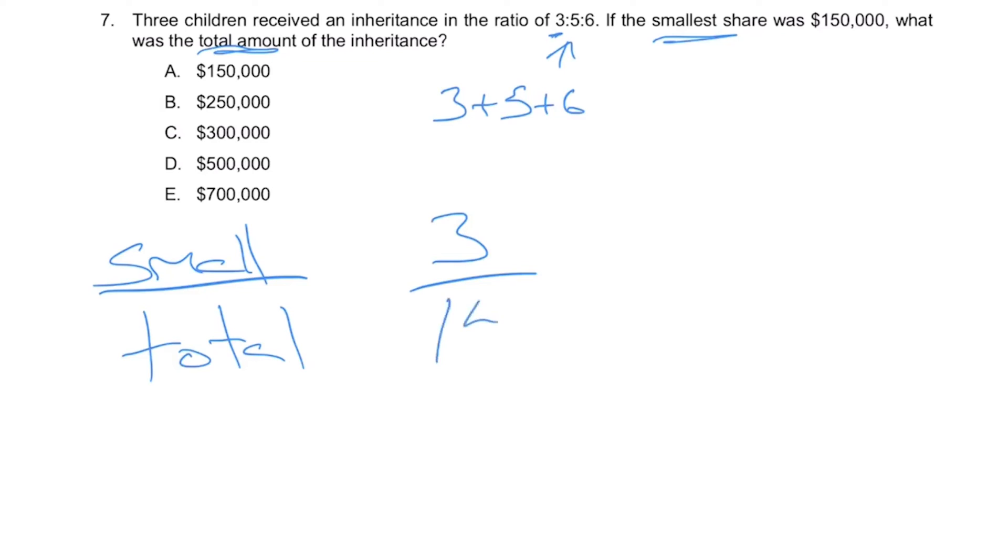The small over the total inheritance is going to equal—so now we deal with the money. The smallest share was one hundred and fifty thousand dollars over—now the total amount is what we don't know. We've set up our proportion with the two ratios and now we just cross multiply and divide. So this is going to cross to here and this is going to cross to here. I'm going to end up with three X is equal to two point one million or two million one hundred thousand.